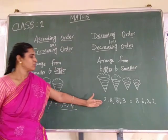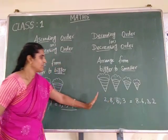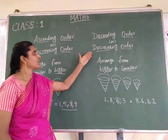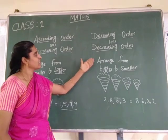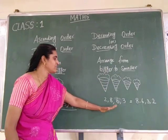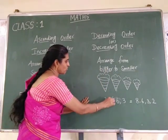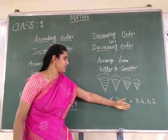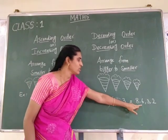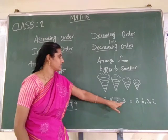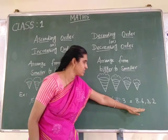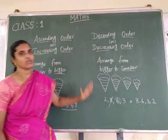See here: 2, 8, 6 and 3. Now we are going to arrange these numbers in descending order, or decreasing order. Decreasing order means bigger to smaller. Which one is bigger? 8 is the bigger one, so first write 8. Then which one is bigger? 6. So the next one you write 6. Next one is 3, and the last one is 2. So we arrange these numbers in descending order.